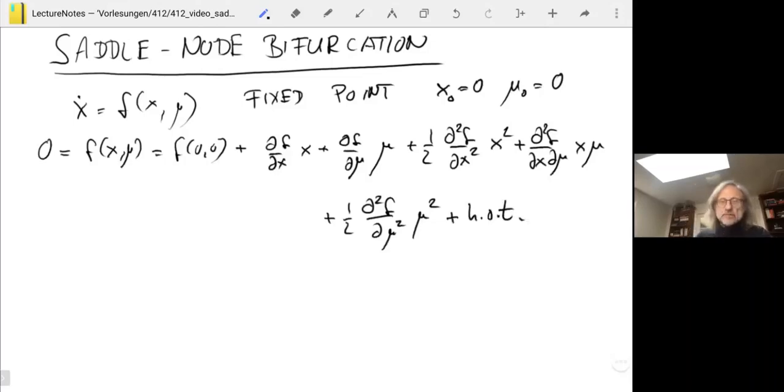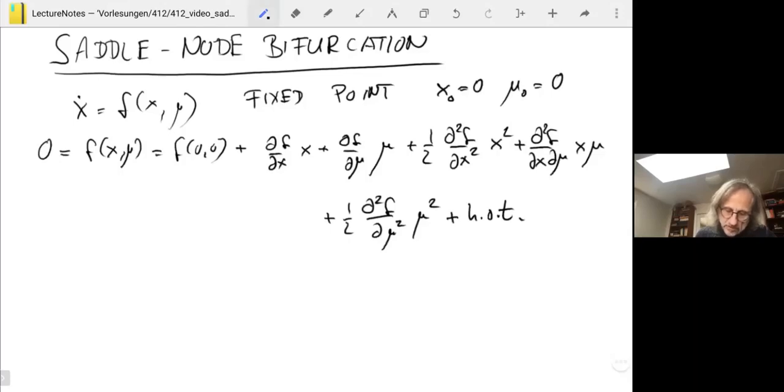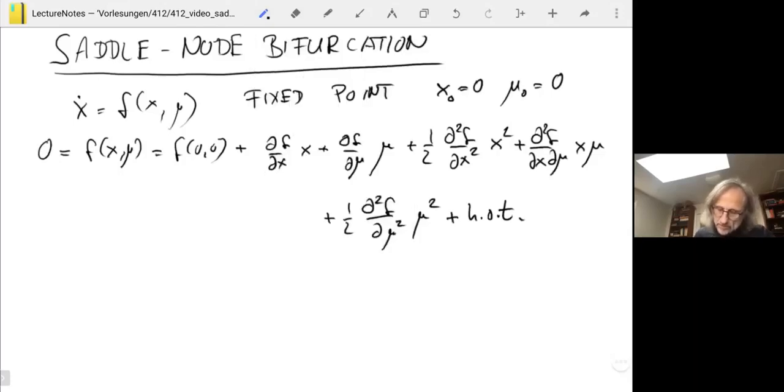As before, we'd like to simply solve for x as a function of mu. Let's see whether we can do that and under what conditions. We said that zero, zero is a fixed point, so this term here is actually zero, we can ignore it. We also assume that we are at the point where the implicit function theorem does not apply. So that means df by dx is zero, and so we can throw that term away.